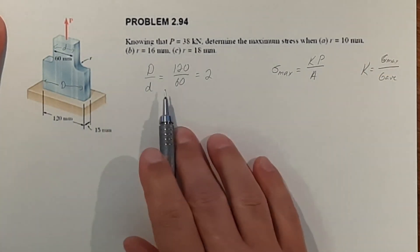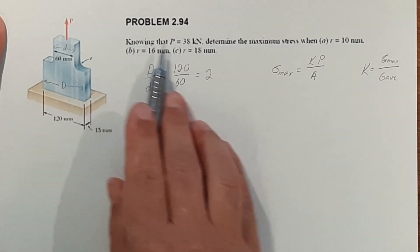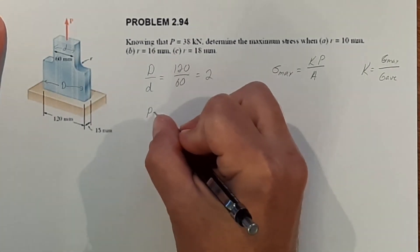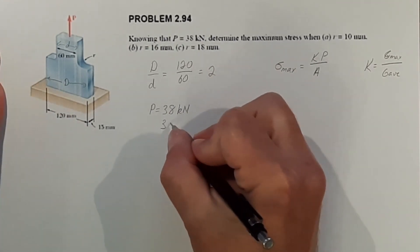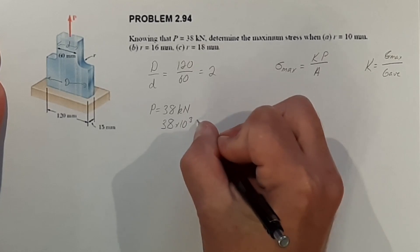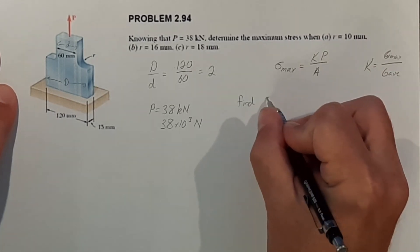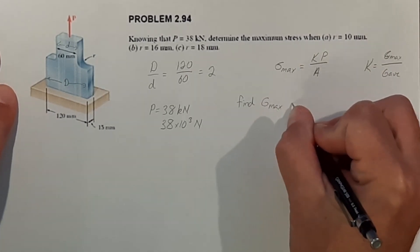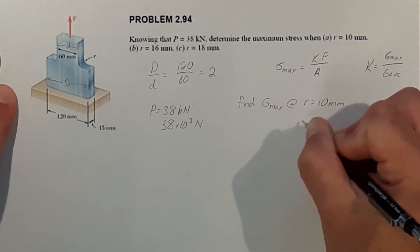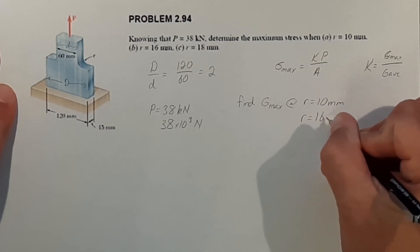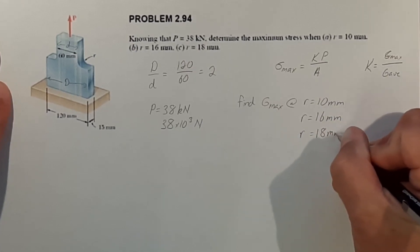All right, so this problem is asking us, knowing that P, this force that we're putting here, is equal to 38 kilonewtons or 38 times 10 to the 3rd newtons. So we need to find the max stress at R equals 10 millimeters, R equals 16 millimeters, and R equals 18 millimeters.